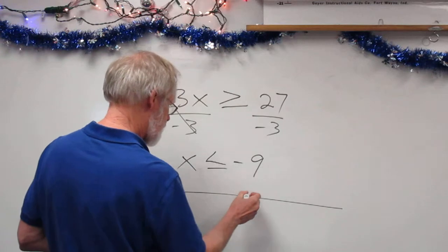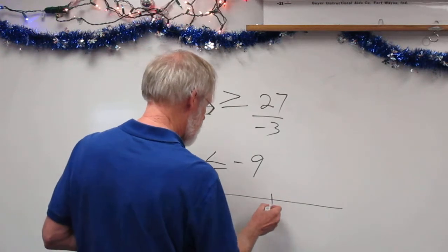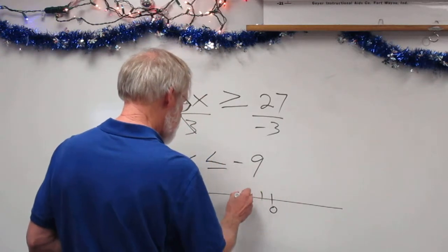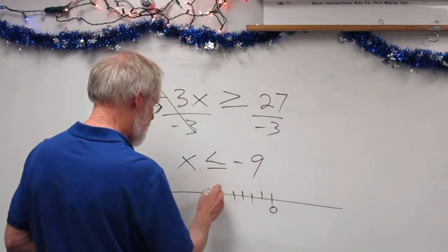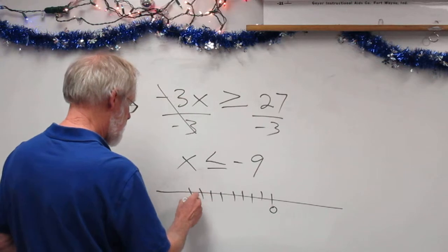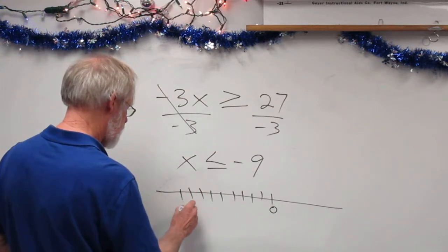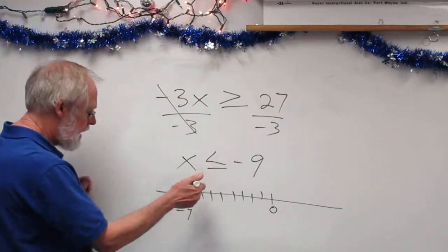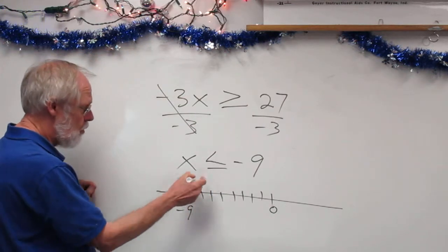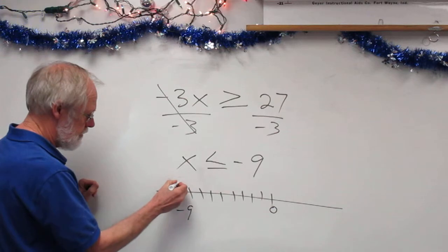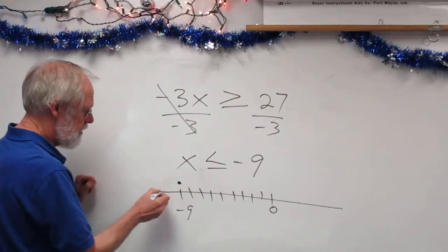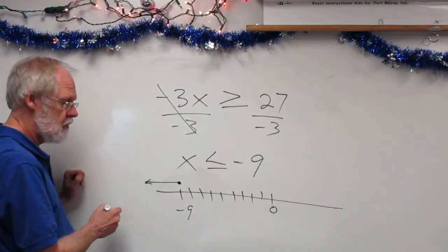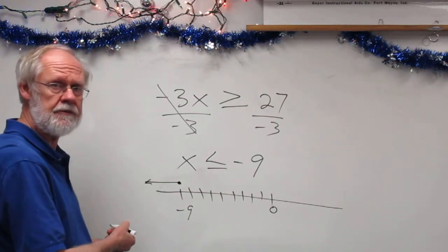If I want to graph that, I'm going to put 0 here, count out to negative 9 on the left side, and since it's less than or equal to, I fill in the dot and the arrow goes to the left.